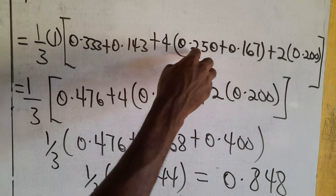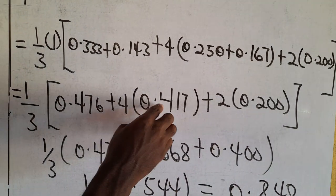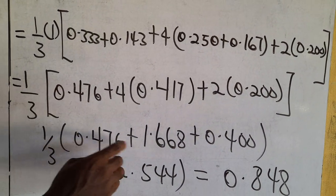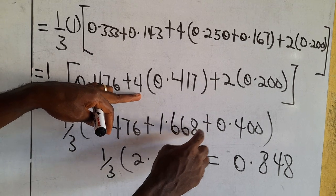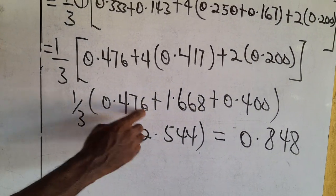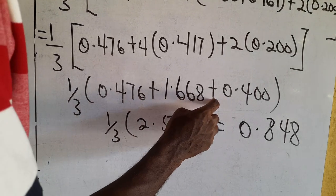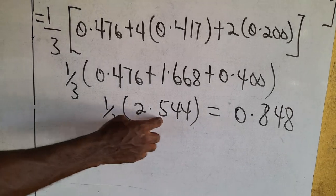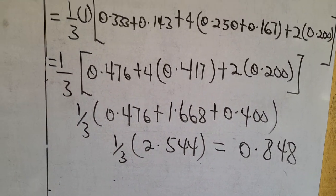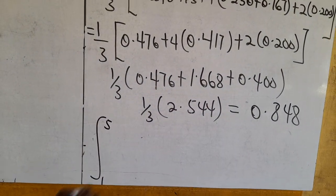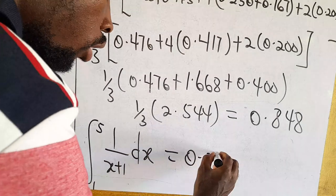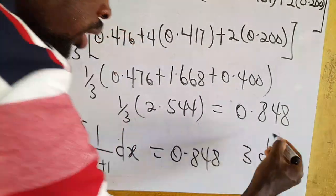Adding 0.250 and 0.167 gives 0.417; times 4 gives 1.668. Then 2 times 0.200 gives 0.400. Adding 0.476 (that's 0.333 + 0.143) plus 1.668 plus 0.400 gives 2.544. Then (1/3) times 2.544 equals 0.848. Therefore the integral from 1 to 5 of 1/(x+2) dx using Simpson's 1/3 rule equals 0.848, correct to 3 decimal places.